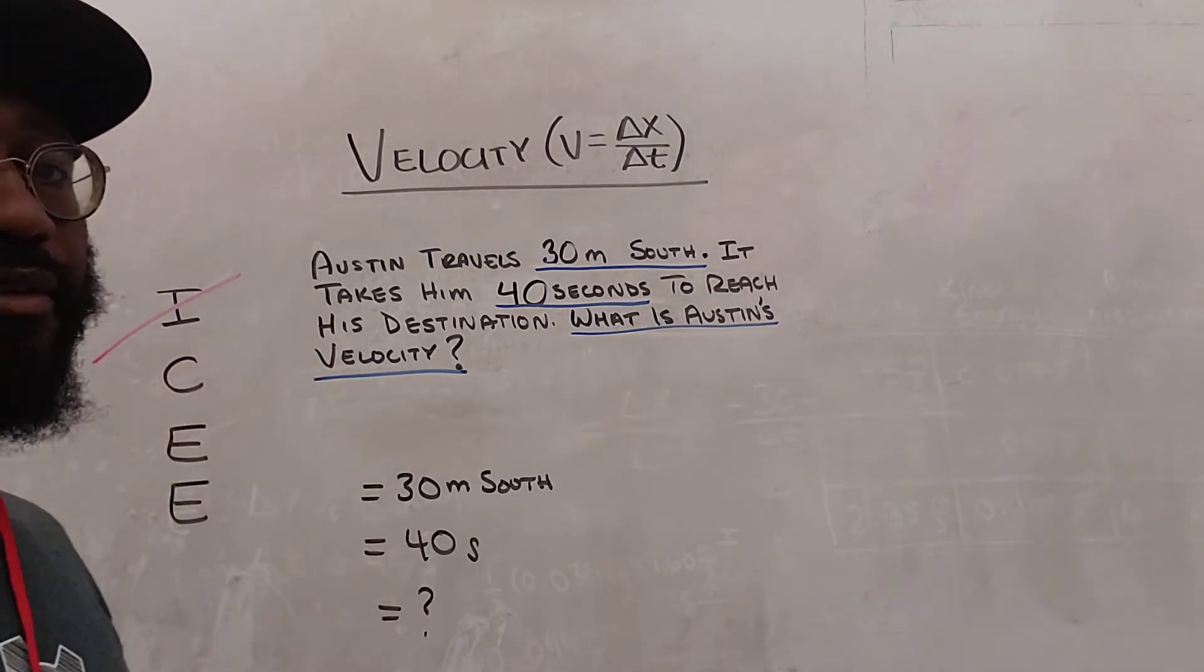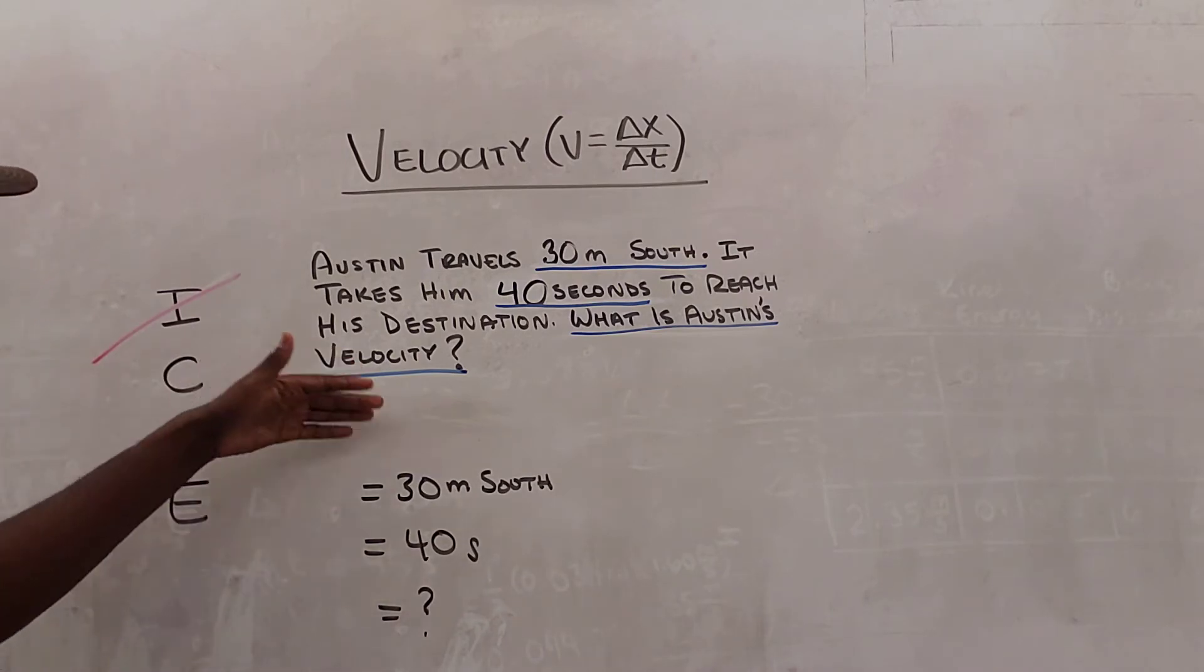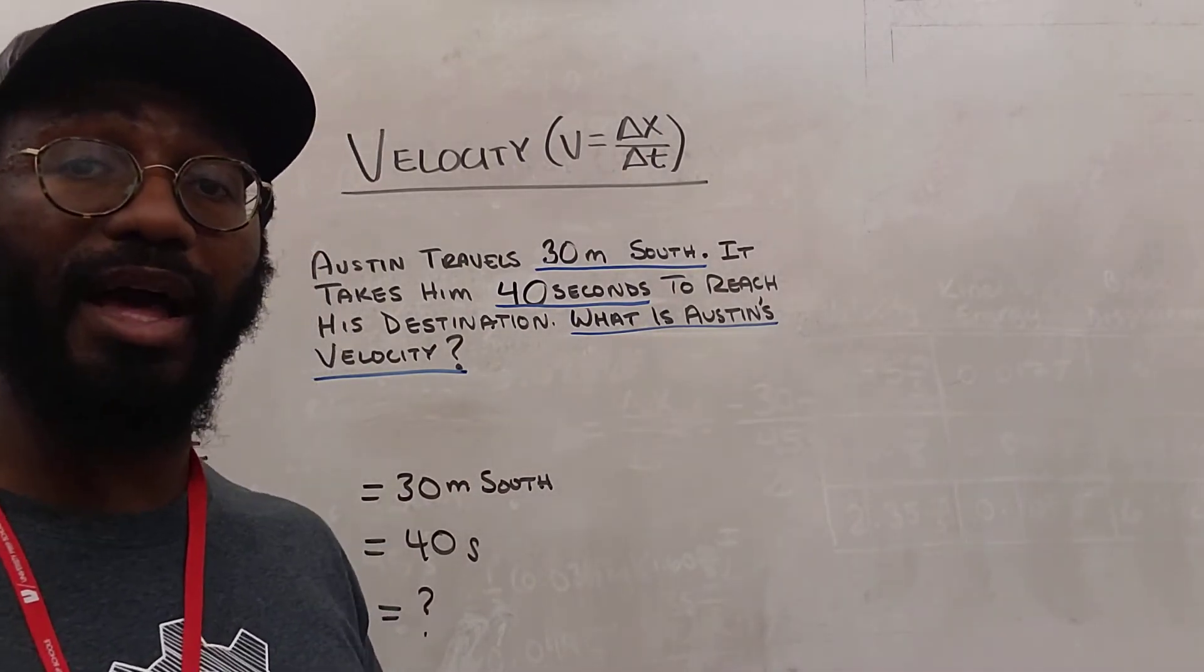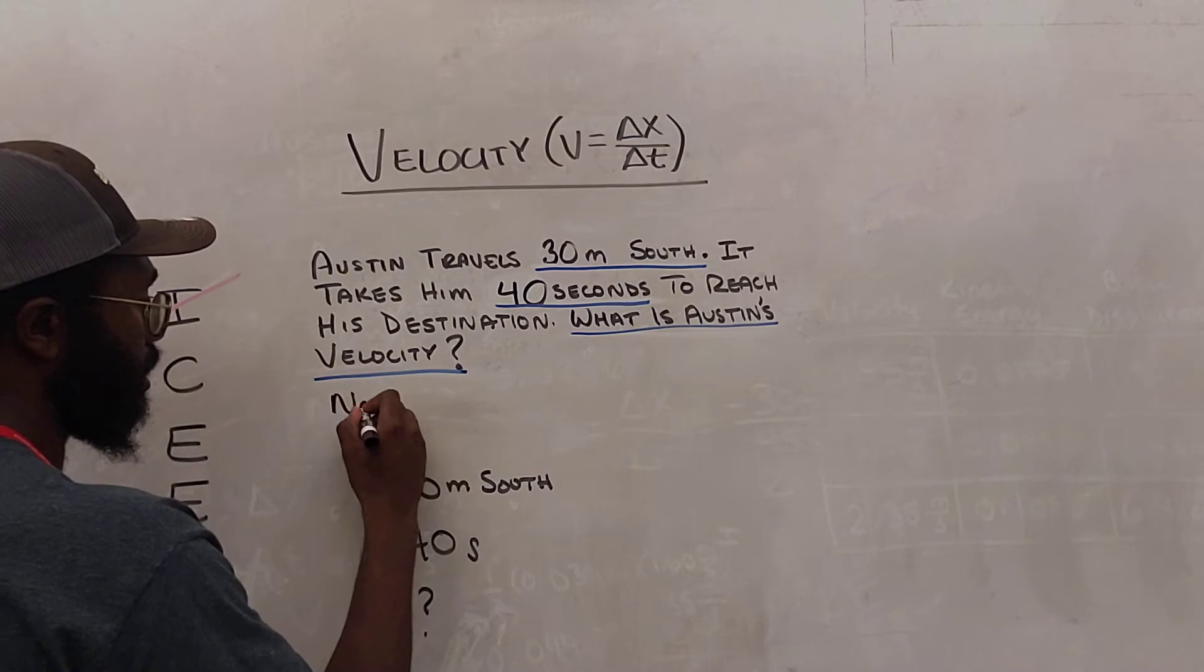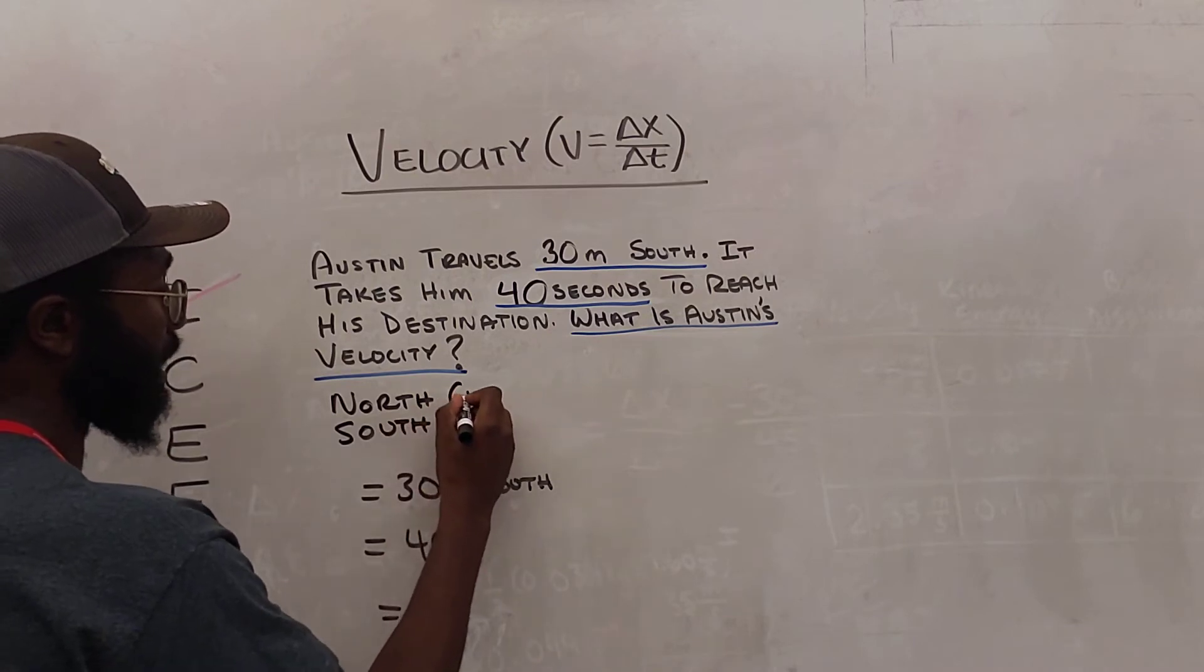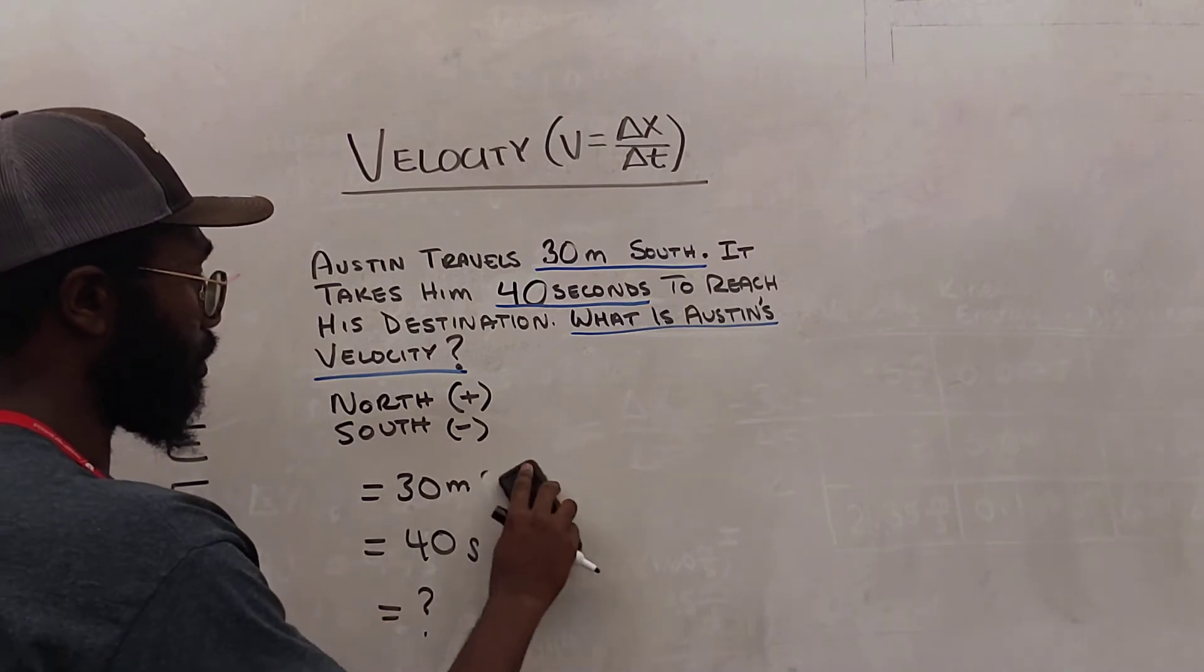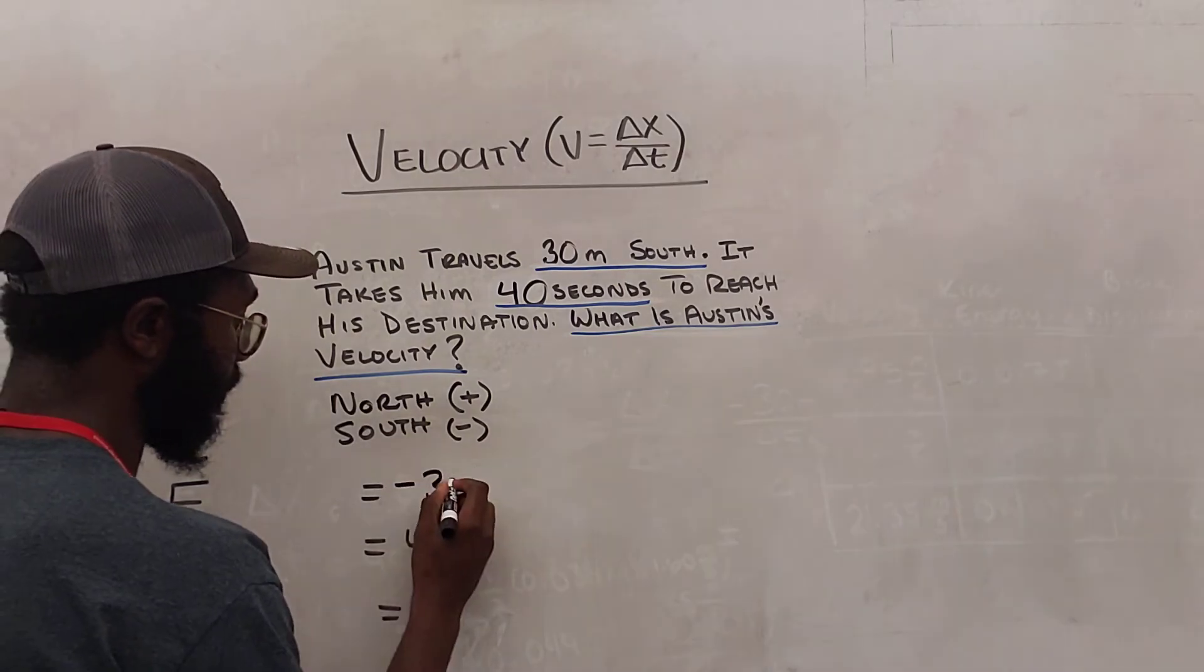Now, we have to go ahead and categorize these using a variable. So for starters, let's just go in order. So I see 30 meters south. Now, when I see south, I know I need to come up with a convention. Is south going to be my positive direction or my negative direction? So I'm going to go ahead and write north and south up here. And I need to set a convention. So my convention is going to be that north is the positive direction and south is the negative. What this enables us to do is we don't have to continue to write south in our equation when we're trying to solve this problem. We can represent it instead with a negative sign.